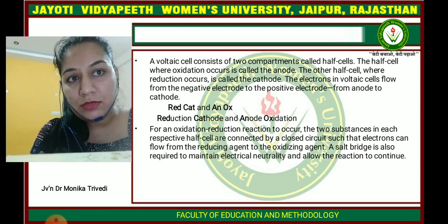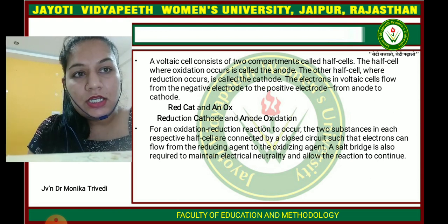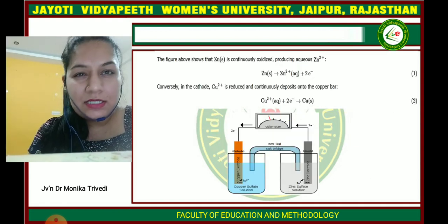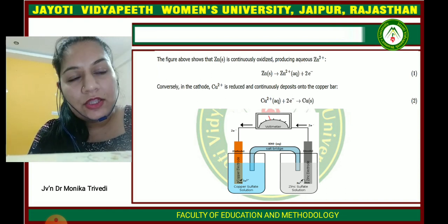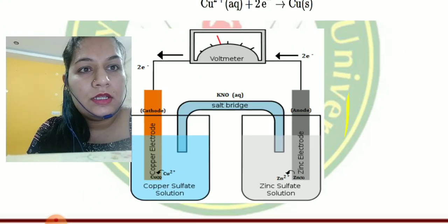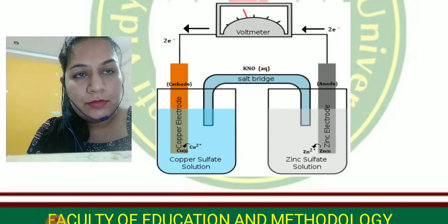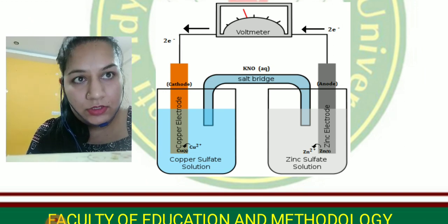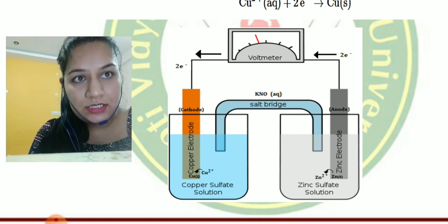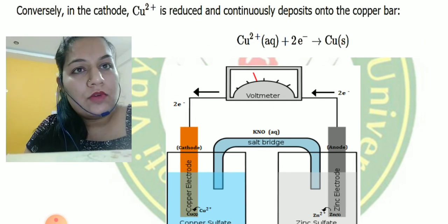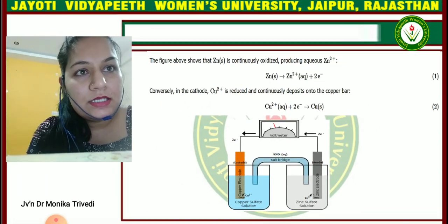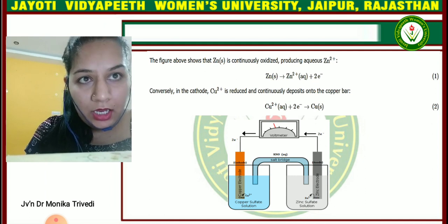A salt bridge is also required to maintain electrical neutrality and allow the reaction to continue. Here you can see a simple galvanic cell with the cathode and the anode. The salt bridge is built using KNO3 in aqueous solution. Here you can also see the voltmeter, which reads how much electricity this cell generates. You can see the reactions occurring at the cathode and the anode.